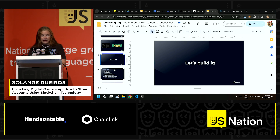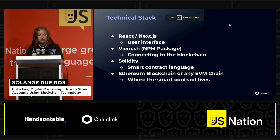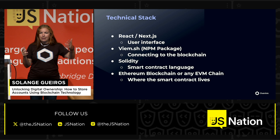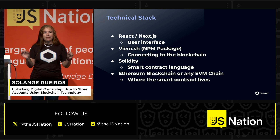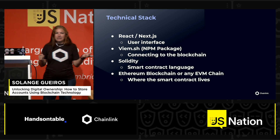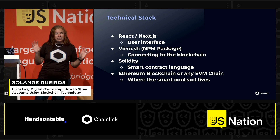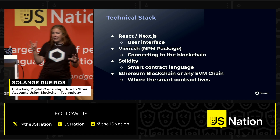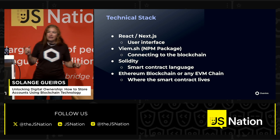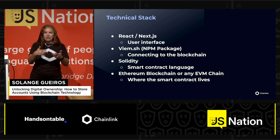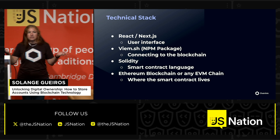So let's build it. I'll share a Gitbook tutorial during the talk so you can follow step by step later. I'm using React Next.js as my interface and a package called Viem to communicate with the blockchain. I'm also using Solidity — the language to program smart contracts — and I have a smart contract to deploy live right now. I'm using the Ethereum blockchain, specifically one of the testnets. It's not a real network with real money, but it's a real distributed network anyone can use.